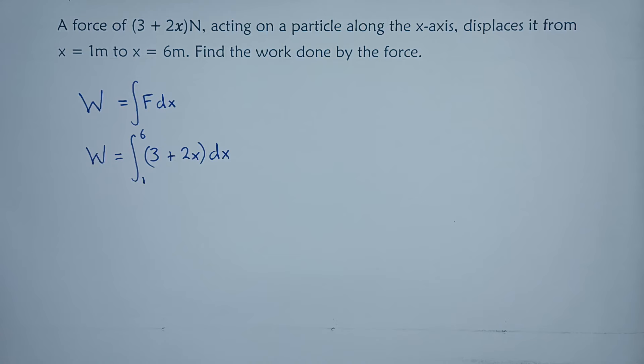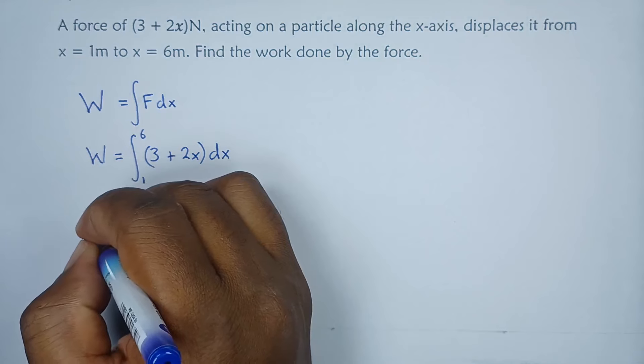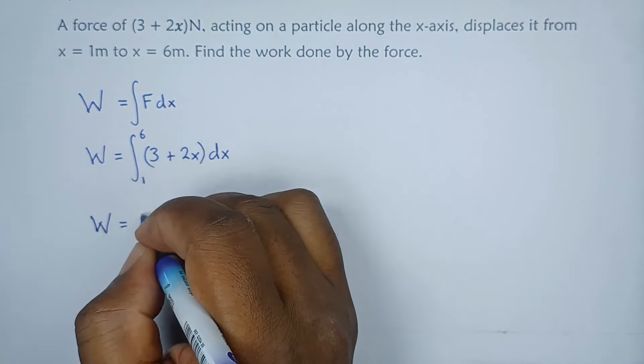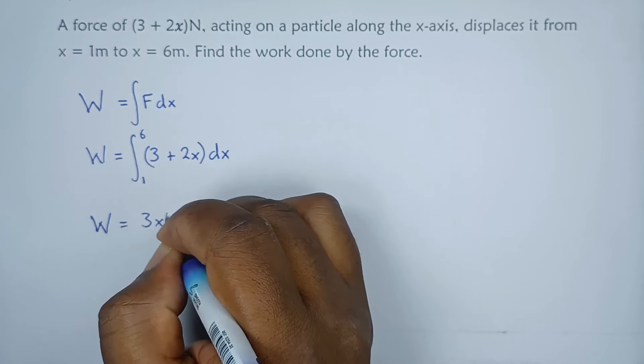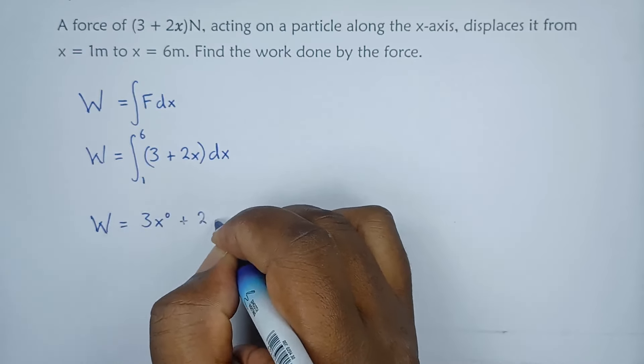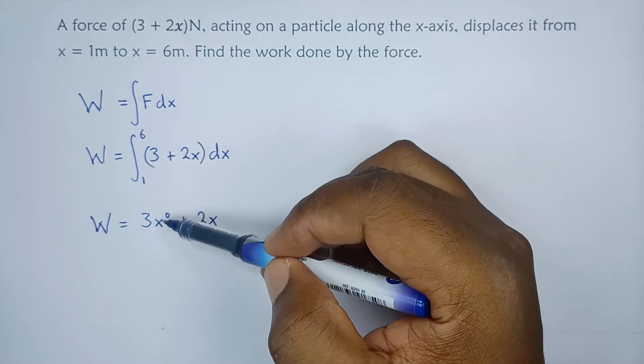So integrating this function, here's what we can do. We're done, we have three x raised to the power zero plus two x. This is what we have. Remember there's no x here but x to the zero is just as good as one.